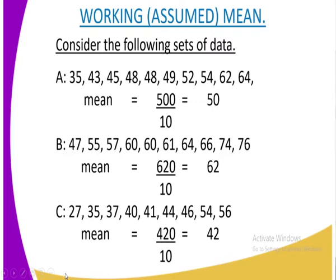We are going to have a working or an assumed mean whereby you are given a set of data which you require to calculate the mean. We have data A, B, and C. From data A, you add up all the values and divide by the number of quantities. In the case of A, we have 35, 43, 45, 48, 48, 49, 52, 54, 62, and 64. The total is 500, divided by 10 quantities, so the mean for data A is 50.